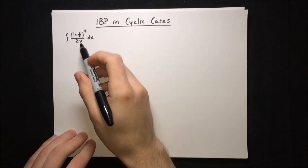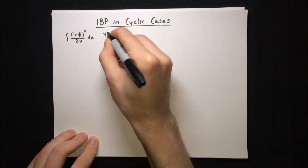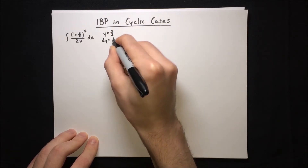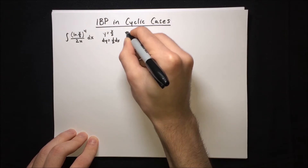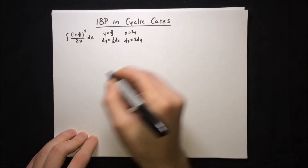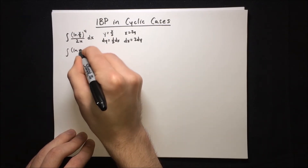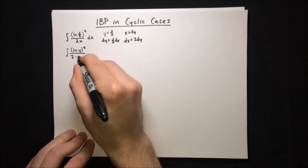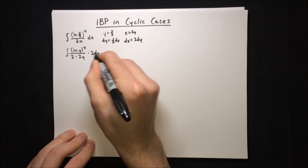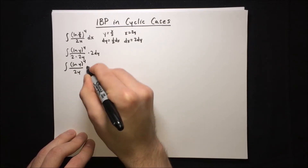We're going to start off by performing substitution on this integral, just to simplify it a bit. We'll set y equals x over 2, so dy equals 1/2 dx, x equals 2y, and dx equals 2dy. That lets us simplify the integral to ln(y^4) over 2 times 2y times 2dy, which becomes ln(y^4) over 2y dy.